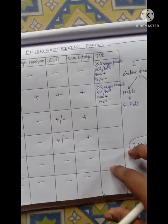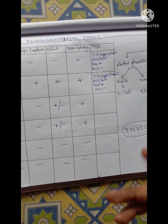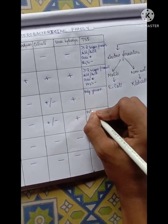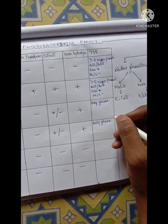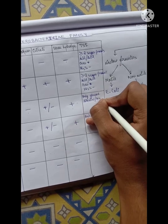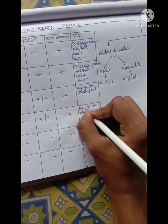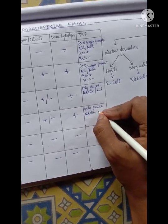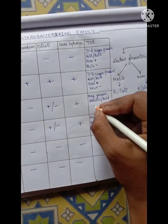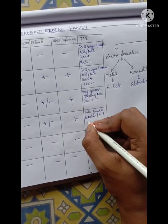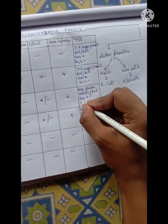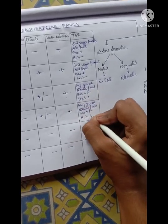Then, coming to Proteus Mirabilis and Proteus Vulgaris — for them, they can ferment only Glucose. Since they ferment only one sugar, it will produce Alkaline slant, Acid butt — Alkaline/Acid (KA). Gas is variable for Proteus Mirabilis and Proteus Vulgaris, meaning it can produce gas or it may not be produced. And for H2S, they do produce H2S.